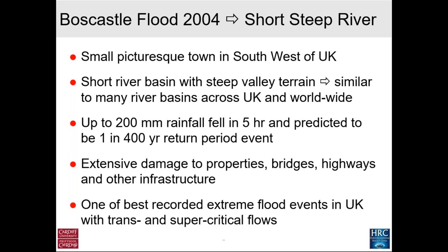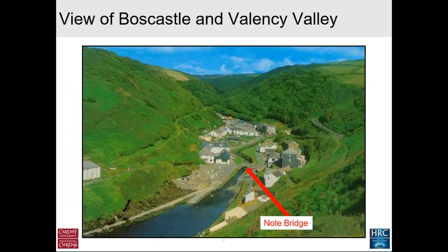There was extensive damage to properties, bridges, highways, and other infrastructure. Boscastle is still one of the best recorded extreme flood events in the UK, with both trans and supercritical flows — meaning we are close to what's called a Froude number of one, which is similar to the Mach number in aerodynamics. Here is the valley terrain — note this small bridge, which I'll come back to in a moment.